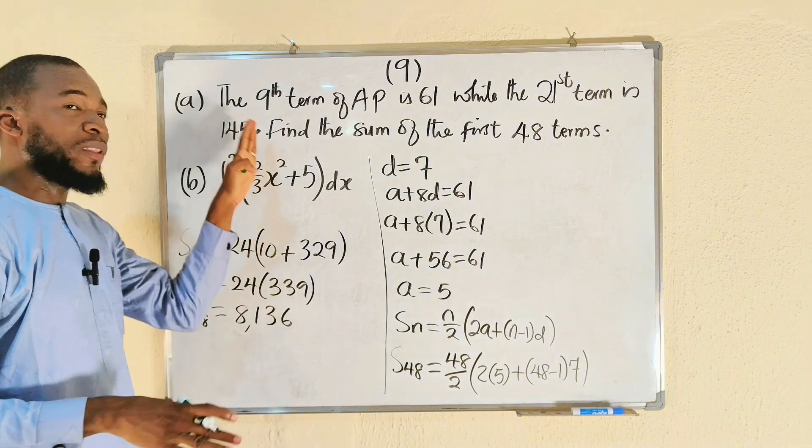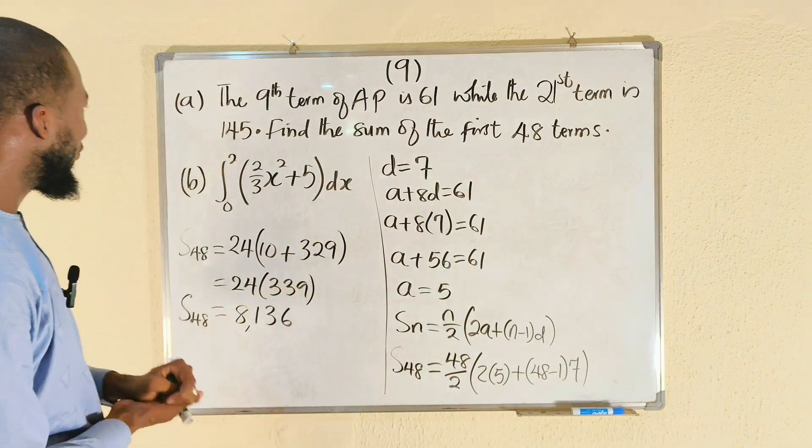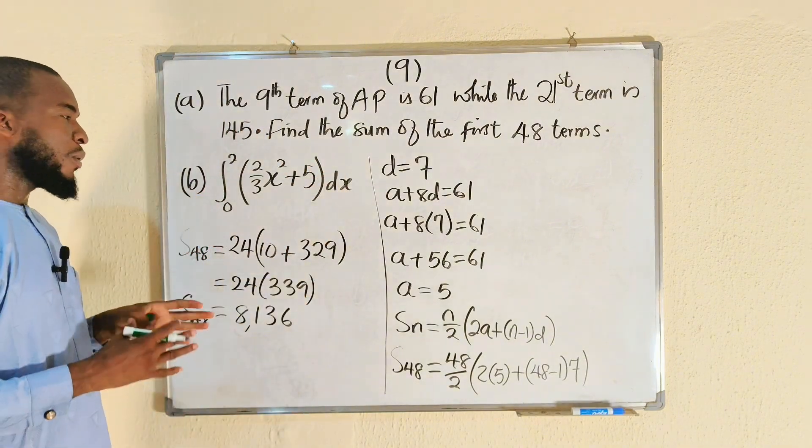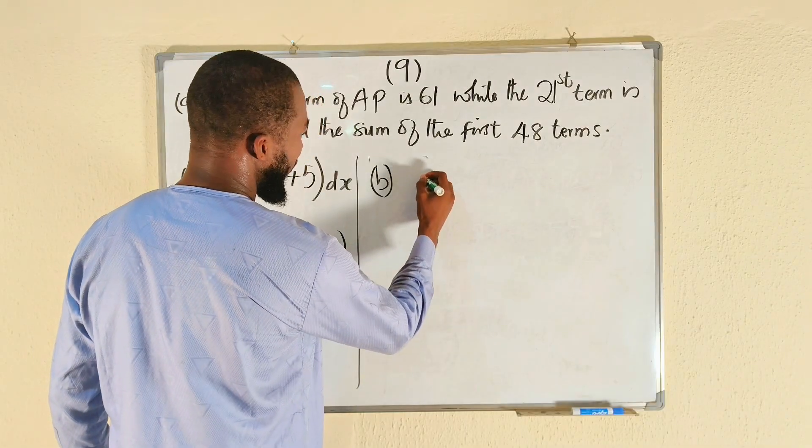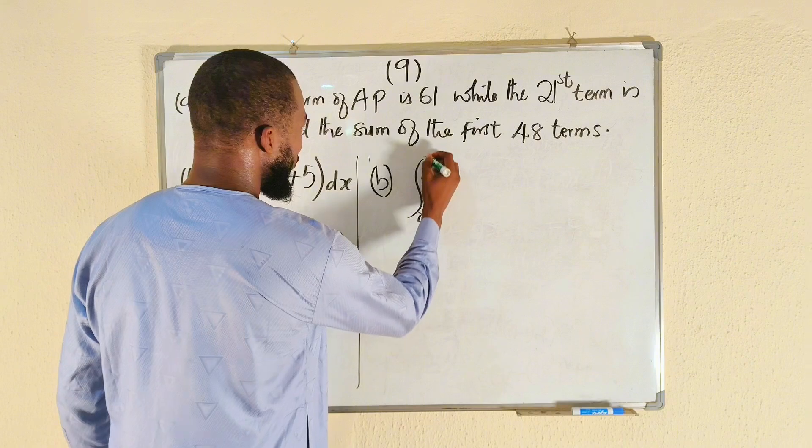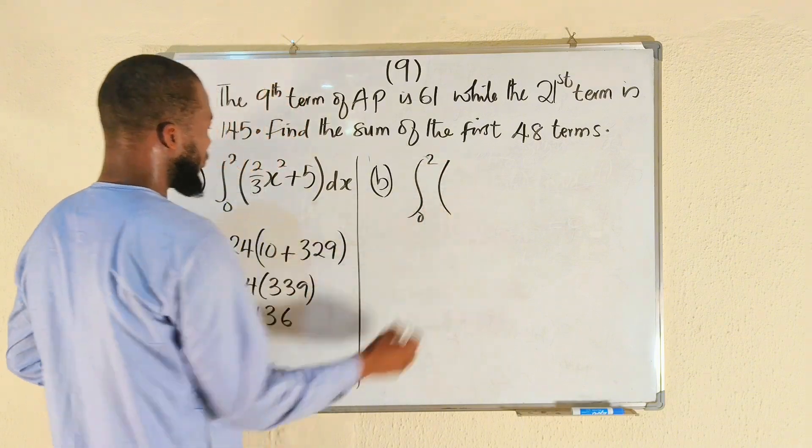We are done with the part A. Now let us move on to the part B where we are asked to evaluate this definite integral. Part B asks us to evaluate the integral from 0 to 2 of the function 2 over 3x squared plus 5 with respect to x.